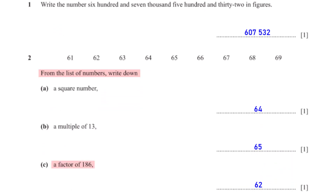Write down a factor of 186. From the list, 62 is a factor of 186. It divides 186 completely with no remainder.